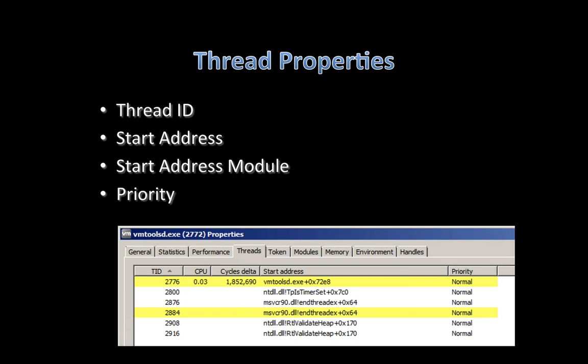What about threads? Threads have a number of properties: the thread ID, the start address of the function the thread was kicked off with, and if that start address is associated with a DLL or the executable itself, which file that is, and the thread priority. You can see that in the threads tab in Process Hacker as well.